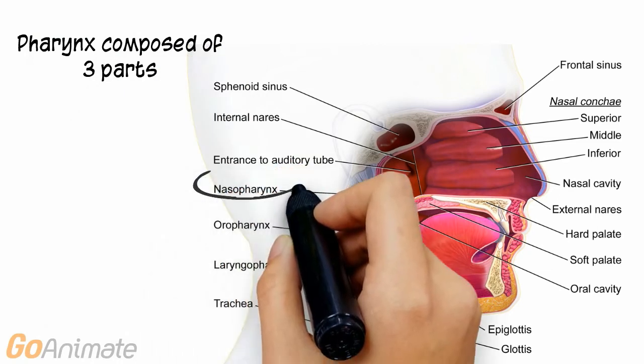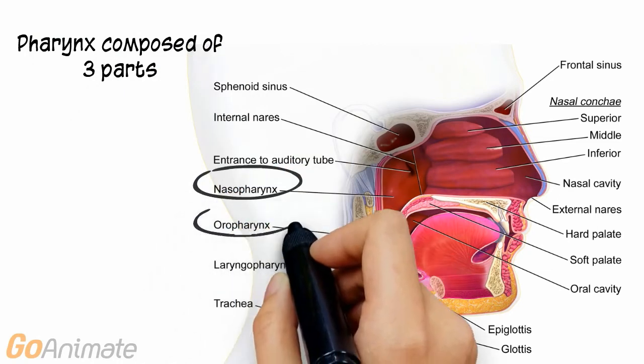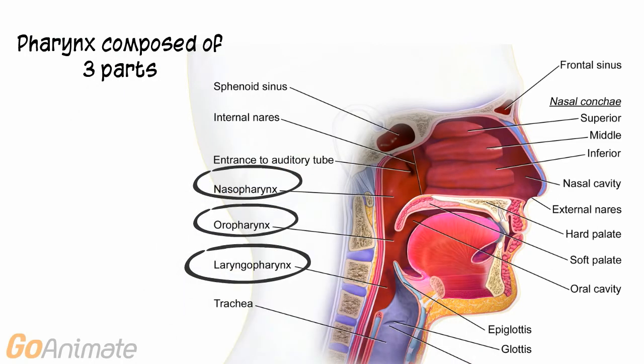Air passes from the nasal cavity to the pharynx. There are three parts of the pharynx. The nasopharynx extends to the end of the soft palate. The oropharynx extends from the soft palate to the epiglottis, and the laryngopharynx extends from the epiglottis to the glottis.